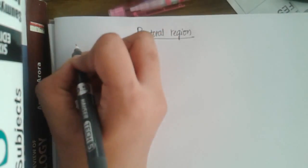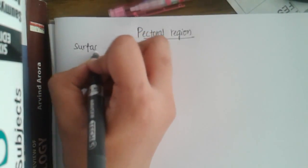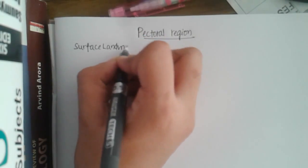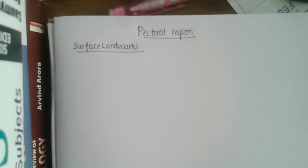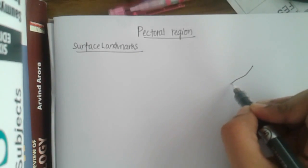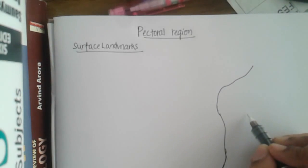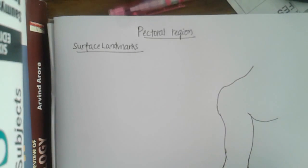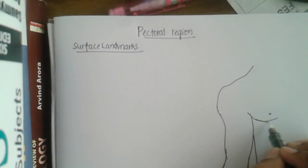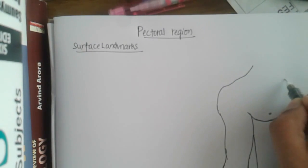First we have to read the surface landmarks which are present and visible in the pectoral region, which will basically cover today's class. I would like to draw as I explain, because anatomy is something you can learn if you imagine it. I may not be the best artist but I can help you this way.